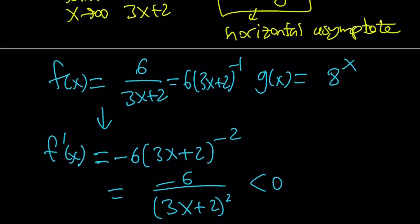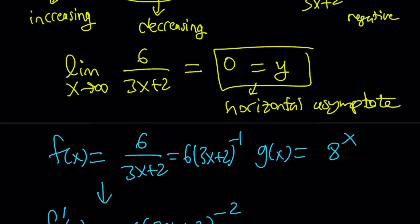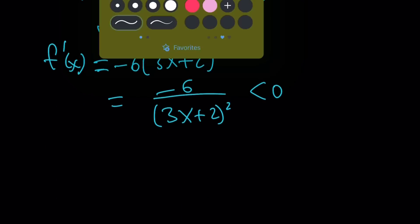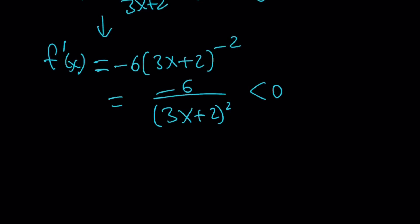This also proves that our function f of x, the rational function, is always going to decrease. But like I said earlier, they're going to intersect at a single point. So let's go ahead and take a look at the graph. But before we look at the graph, I would like to guess the solution. Guesswork.